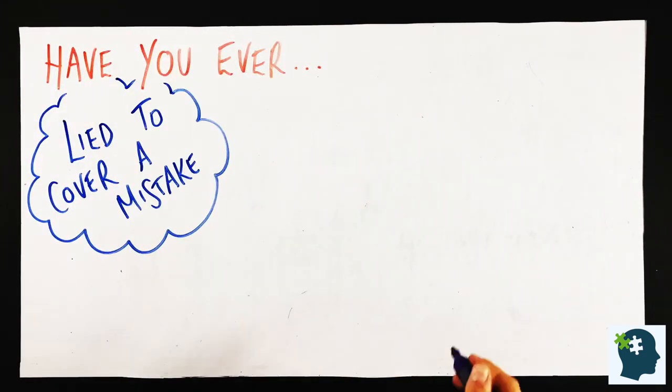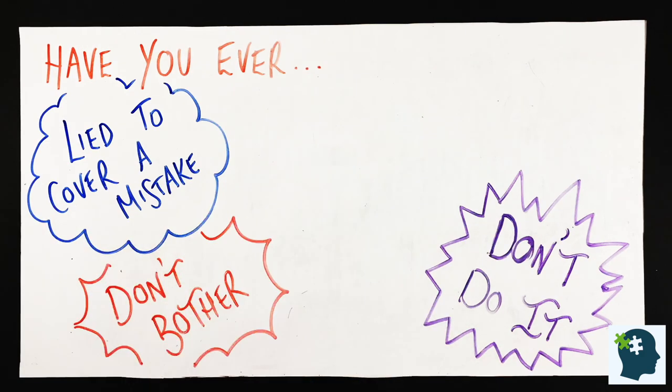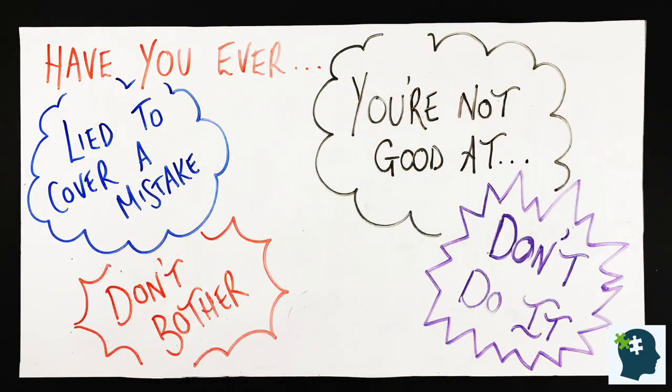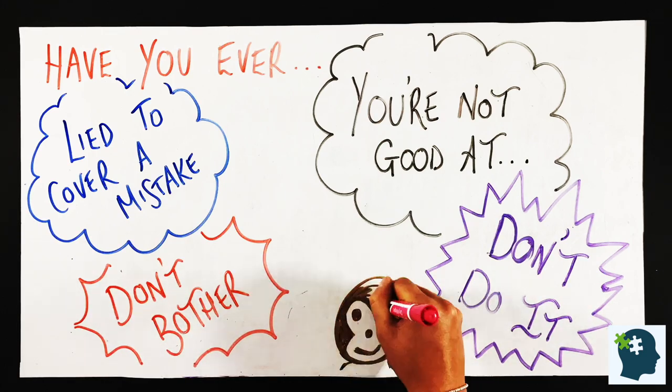So this chimp of ours can be unhelpful. Have you ever lied to cover up a mistake? Wondered why everyone else is doing better than you? Thought you're just no good at sport, so don't bother trying? This is the chimp talking, trying to persuade us to avoid risk and protect us.